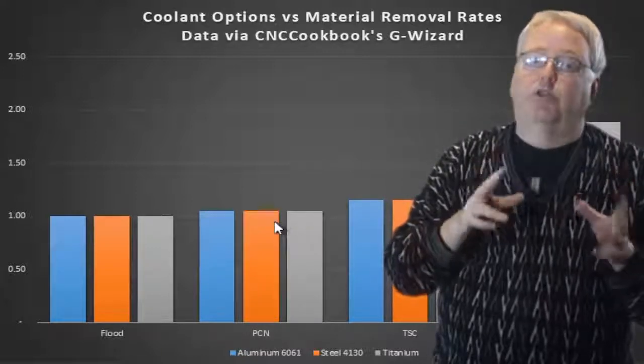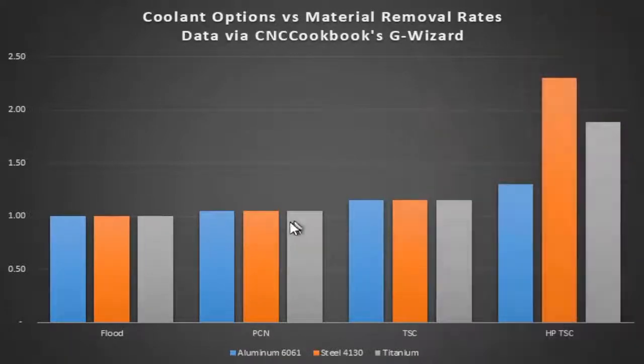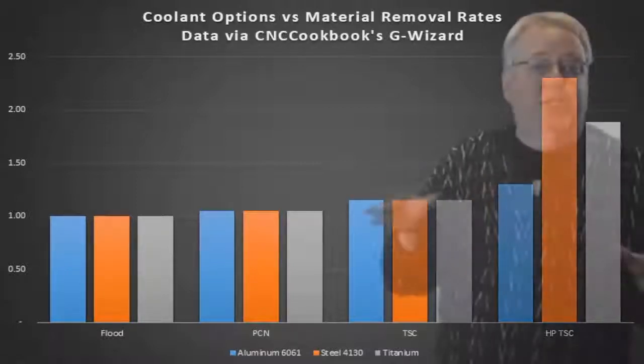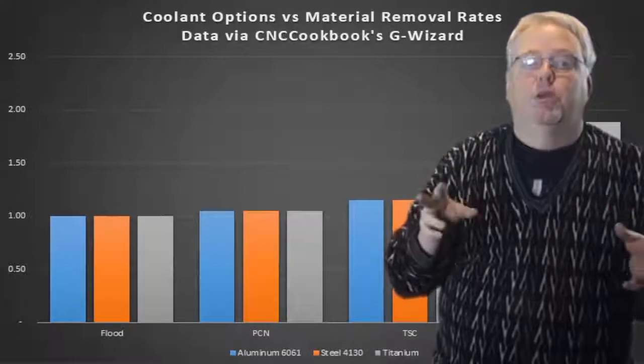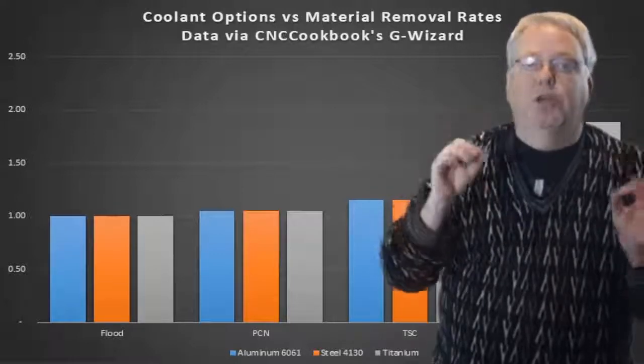The scale is calibrated to show regular flood coolant as 1.0. We can see programmable coolant nozzles help a bit—you get about a five percent higher material removal rate. Through spindle coolant helps a lot more—you get at least 15 percent higher material removal rates. High pressure coolant is really awesome. We're seeing a 230 percent improvement for alloy steel and 189 percent for titanium. In this scenario, it doesn't take long for these machine options to pay for themselves when you see this much performance increase.